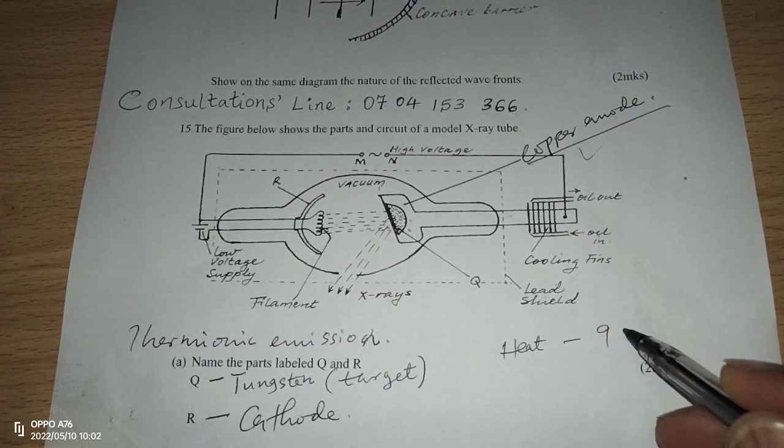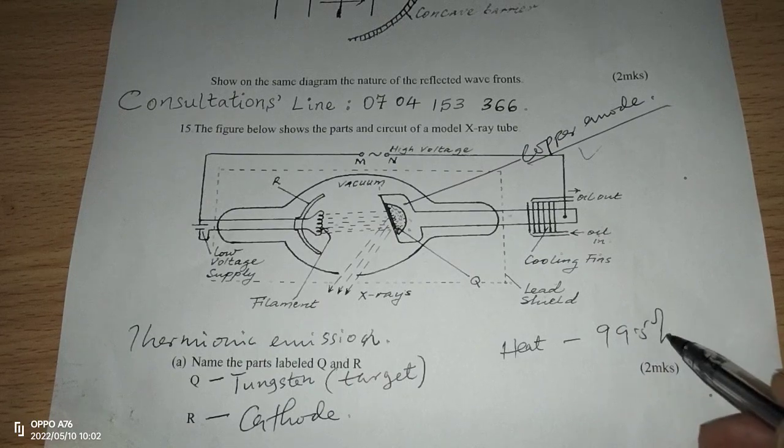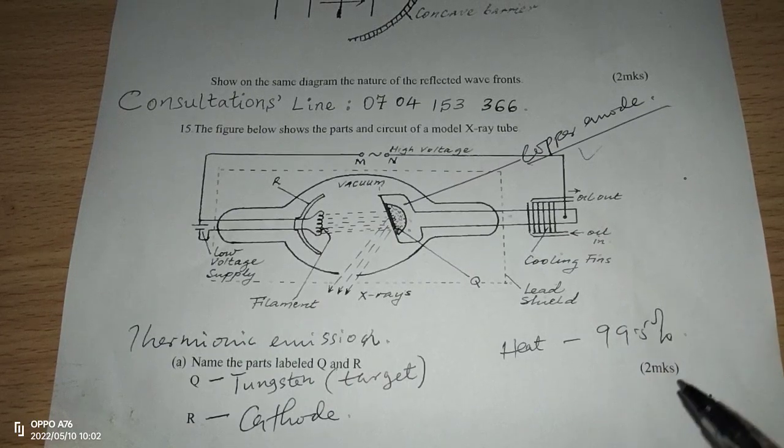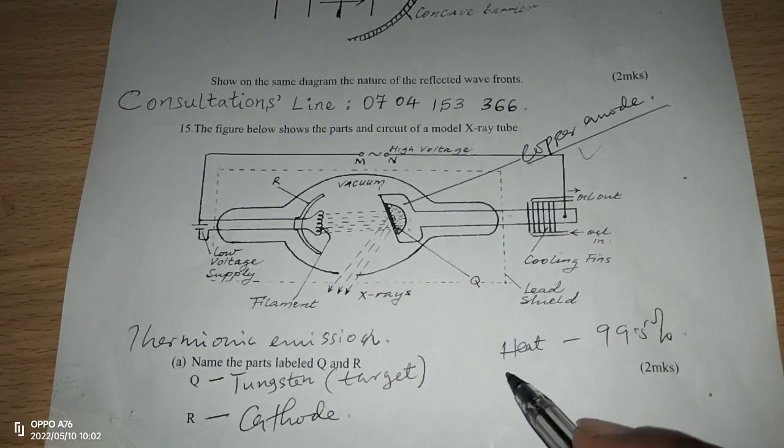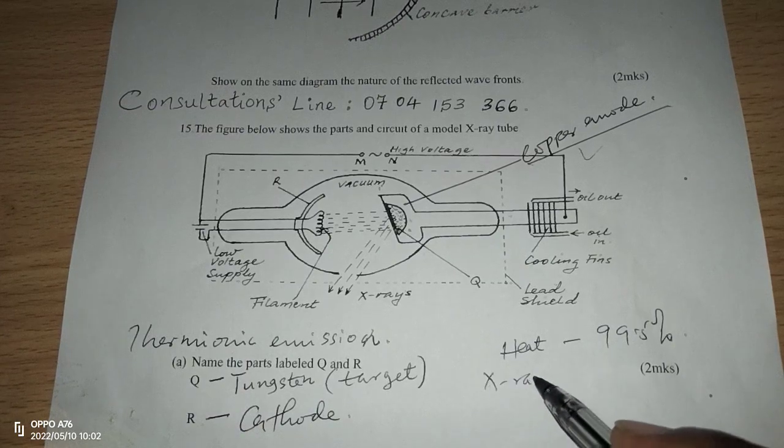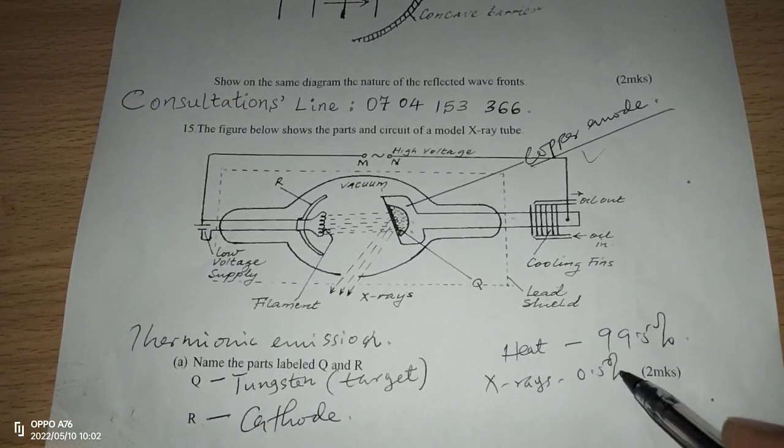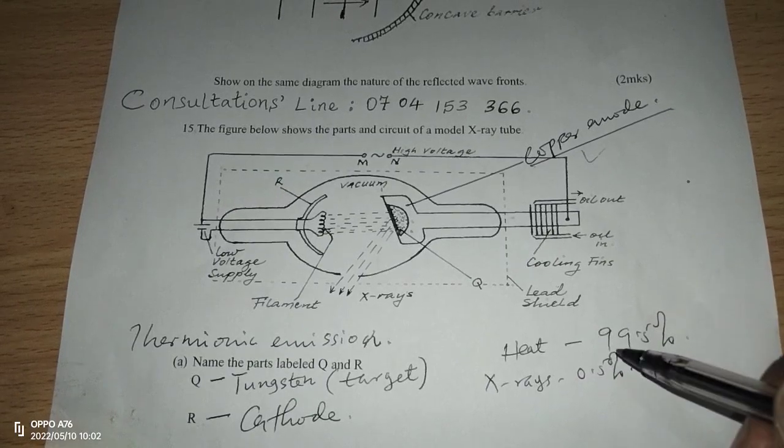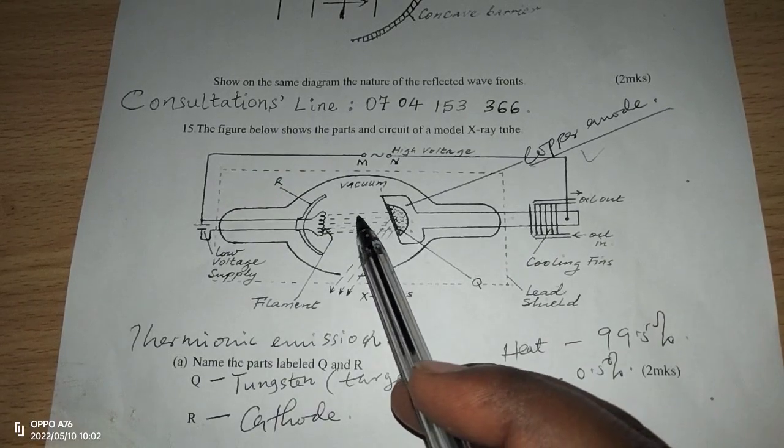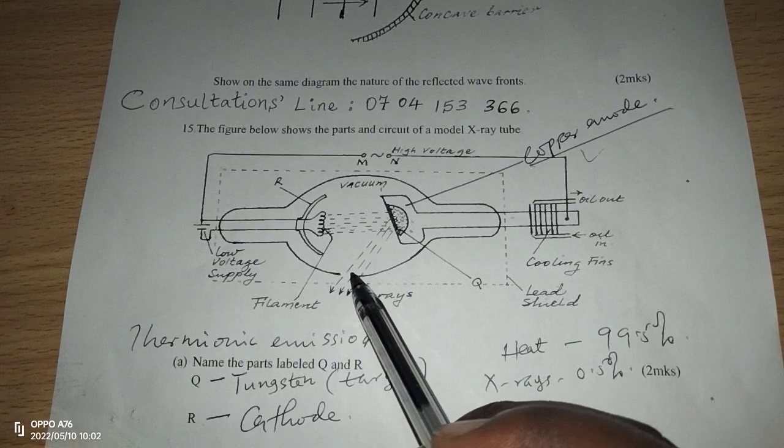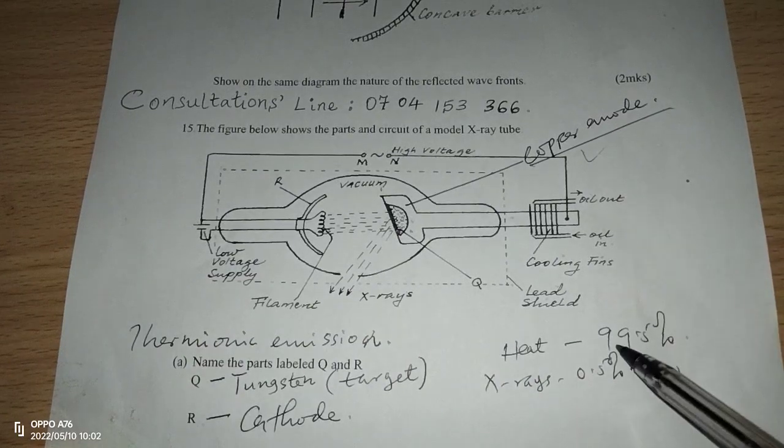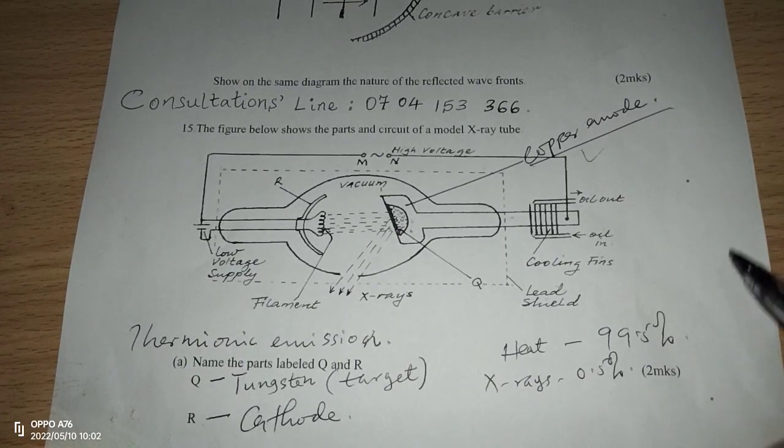Heat energy takes 99.5% of the energy possessed by the electrons, and X-rays take 0.5% of the energy. 0.5% of the energy in the electrons becomes X-rays, and the other part of the energy, 99.5%, becomes heat energy.